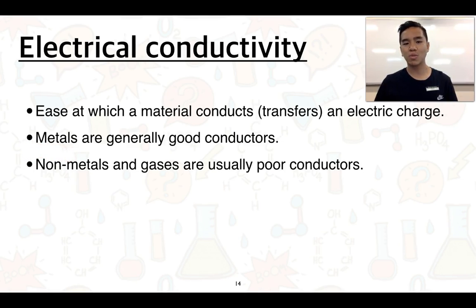Non-metals and gases are usually poor conductors. So again, plastics and rubbers we can often find as insulators to help protect wiring.